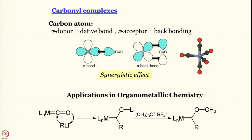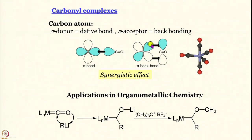Now we want to talk about carbonyl complexes. Carbon monoxide is a very important molecule from the point of view of chemistry as well as physiology. It is known that carbon monoxide uses the carbon atom as a good sigma donor in formation of coordinate bonds, and it can also accept pi electrons. The d orbital of the metal can donate electron density back to be accommodated in some orbital of carbon monoxide — we will see which orbital. This back bonding is called the synergistic effect in inorganic chemistry.